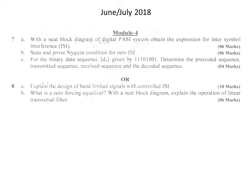Let us start the revision by considering some old university question papers. The first question paper is June/July 2018. The first question is: with a neat block diagram of a digital PAM system, obtain the expression for inter-symbol interference (ISI). We need to draw the block diagram of the digital pulse amplitude modulation system and derive the expression for inter-symbol interference. The mark split-up is 3 + 3 = 6.